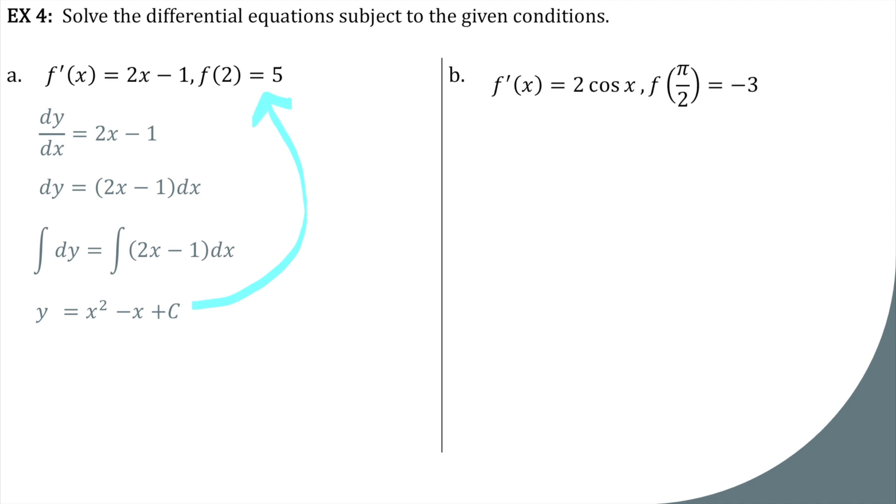Okay, now let's look up here to our given condition. We have an x value of 2 and a y value of 5. Well, we can use those in our new equation to solve for c. 5 = 2 squared - 2 + c. So c equals 3. And I can just plug that back into here. And I have my function. x squared minus x plus 3.